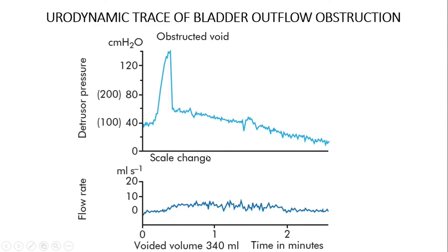In this urodynamic trace taken from Bailey and Love's Short Practice of Surgery, we have shown what bladder outlet obstruction looks like. The upper part shows the detrusor pressure and the lower part shows the flow rate. The detrusor pressure is the voiding pressure, which is in excess of 120 cm of water, and the flow rate is below 10 ml per second. This is the classic picture of bladder outlet obstruction.